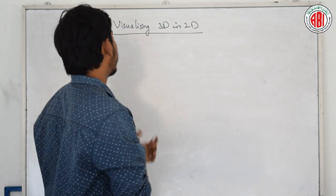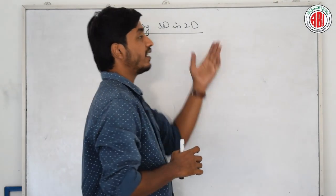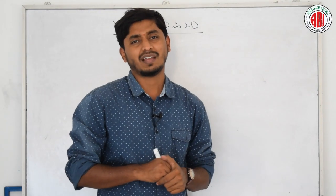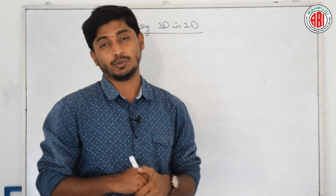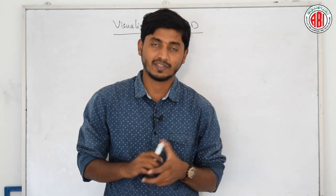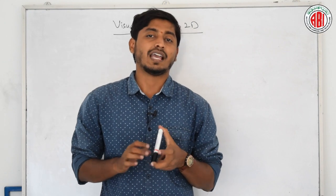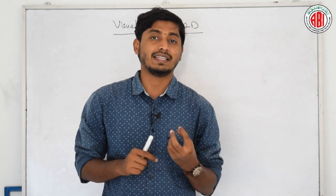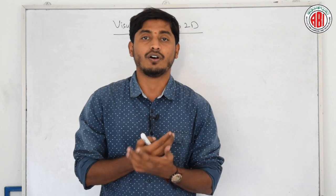The chapter is named visualizing 3D in 2D. What do you mean by this D, 3D, 2D? D is nothing but dimension. What is this dimension? Dimension is the basic division of a length.